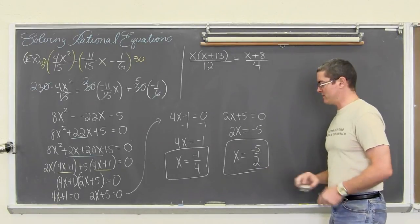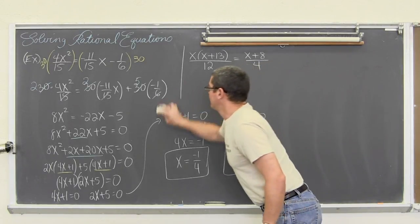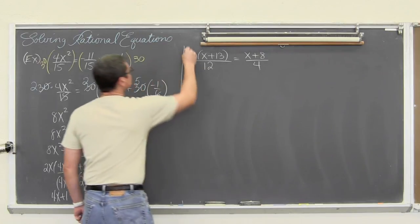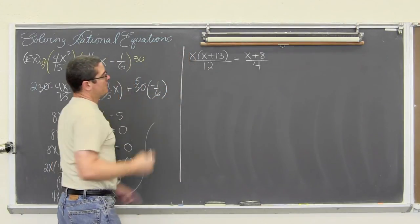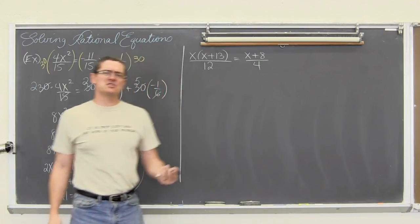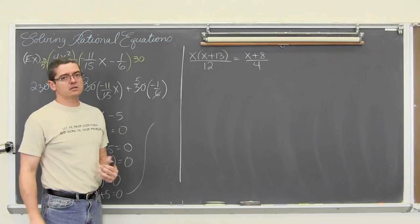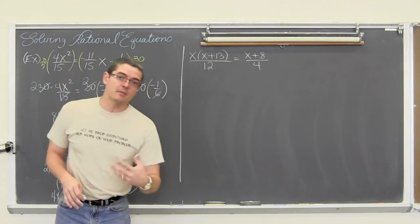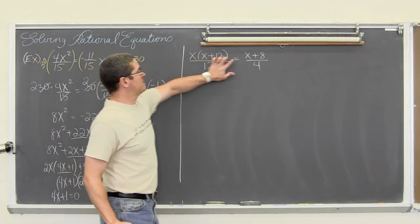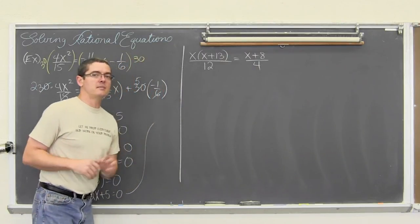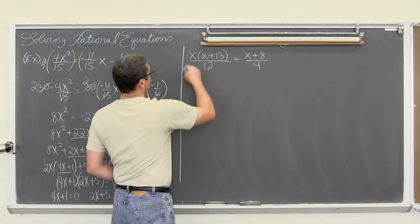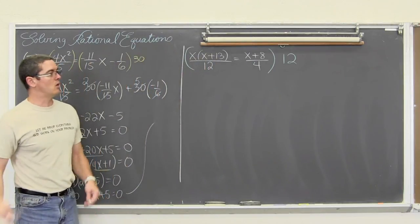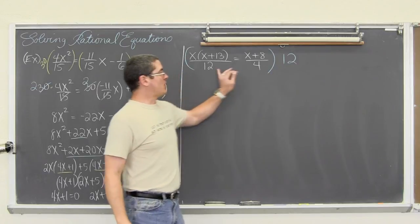Let's get to the other problem here. Make sure you get those answers down. For this example we only have one fraction on the left hand side and one fraction on the right, so we could solve this with cross multiplication. The step I am going to show — multiplying both sides by the lowest common multiple — is going to achieve the same thing in about the same amount of time. I just want you to know that one fraction equal to one fraction, cross multiplication is a valid method. We are going to multiply the entire equation, and I am going to show one huge parenthesis around the entire equation. We are going to multiply by 12.